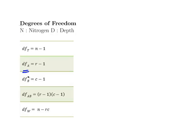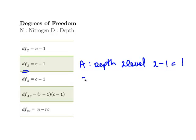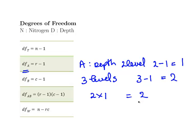The number of rows minus one: A is depth and there are two levels, which is two rows, so two minus one equals one. Columns — that is nitrogen — there are three levels or three columns, so three minus one equals two. Degrees of freedom for A, or depth, is one. Degrees of freedom for B, or nitrogen, is two. This is the interaction effect, which is the product of the two: two times one equals two, so the degrees of freedom for interaction is also two.